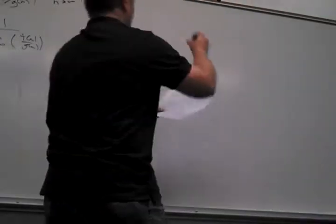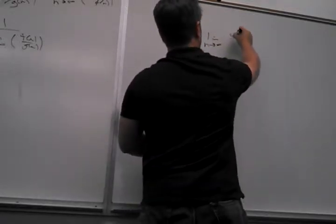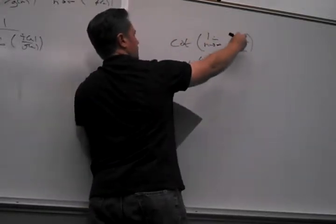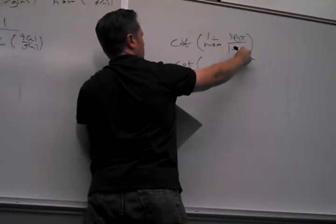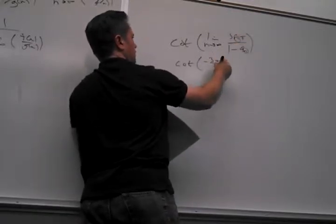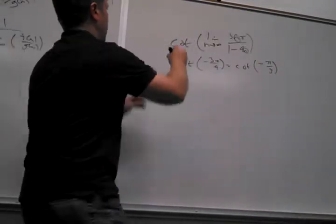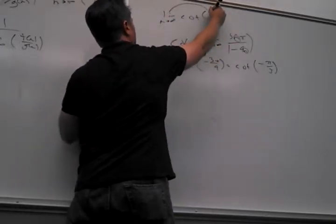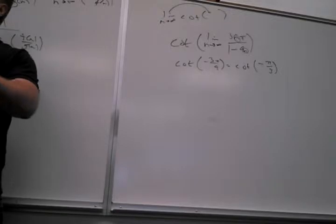So when you take the limit of the inside of that cotangent, what do you get? This would be 3π over something — the degrees are the same here, so it would be 3 over negative 9, which is negative 3/9. And of course, the important thing about that fact — the limit of the cotangent of stuff — I can take the limit inside because cotangent is continuous.